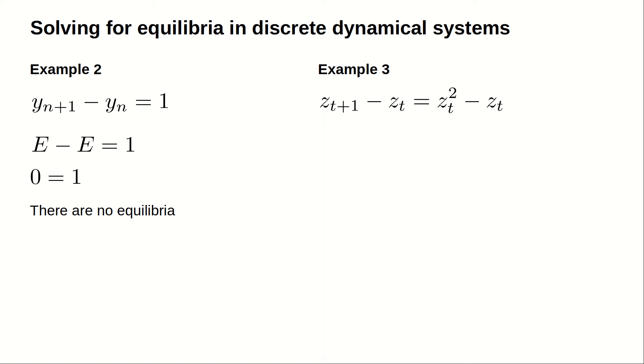Example 3 is z sub t plus 1 minus z sub t equals z sub t squared minus z sub t. We set both z sub t and z sub t plus 1 equal to E to look for the equilibria. We find the equation 0 equals E squared minus E. To solve this equation we factor, obtaining 0 equals E times the quantity E minus 1.